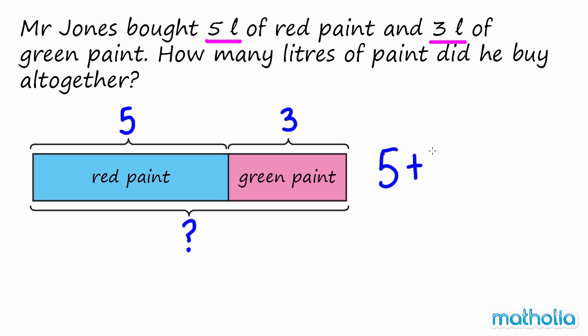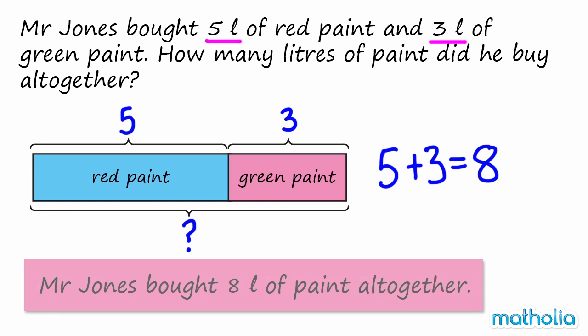5 plus 3 equals 8. So Mr. Jones bought 8 litres of paint altogether.